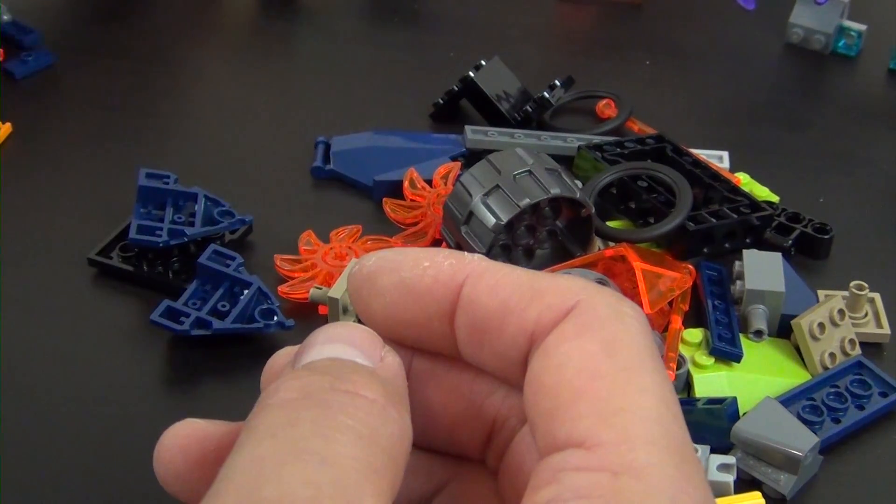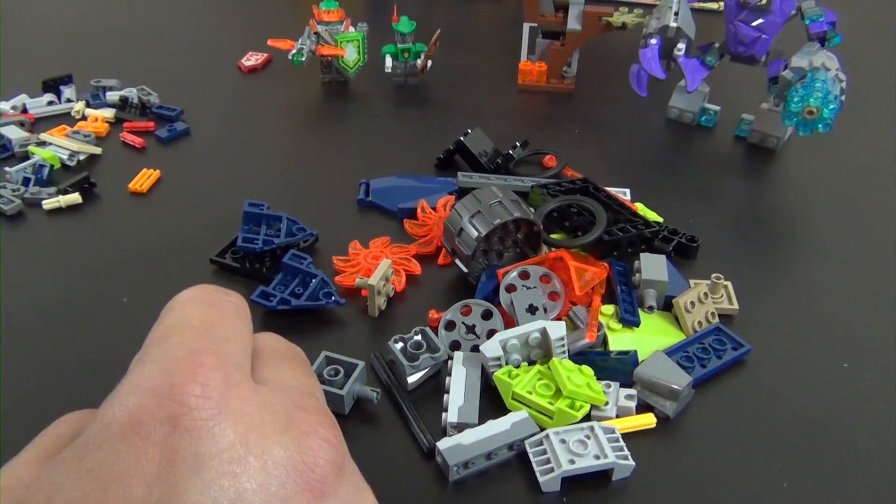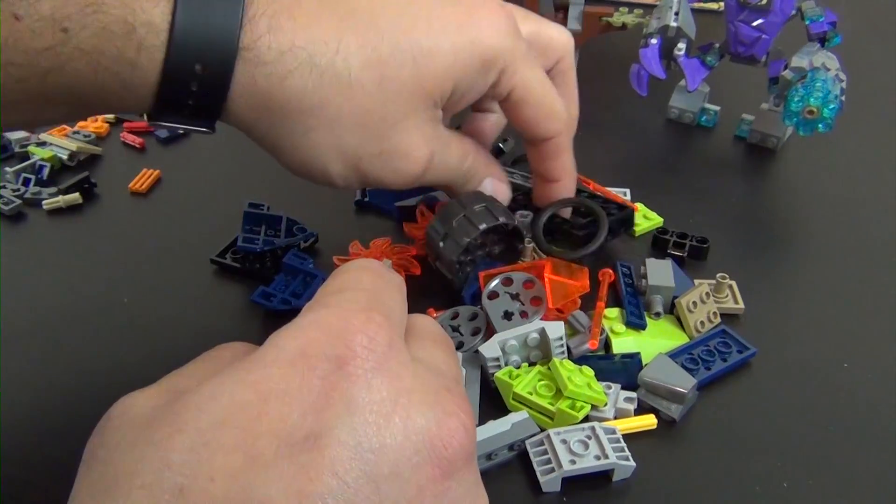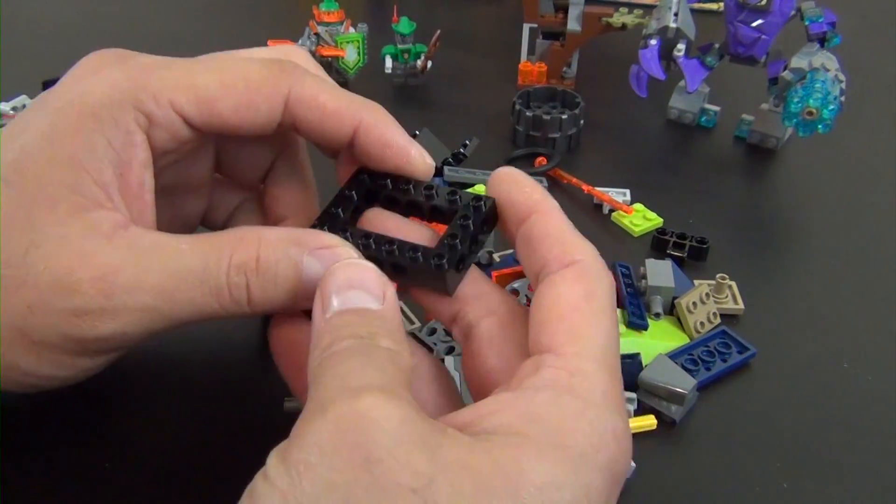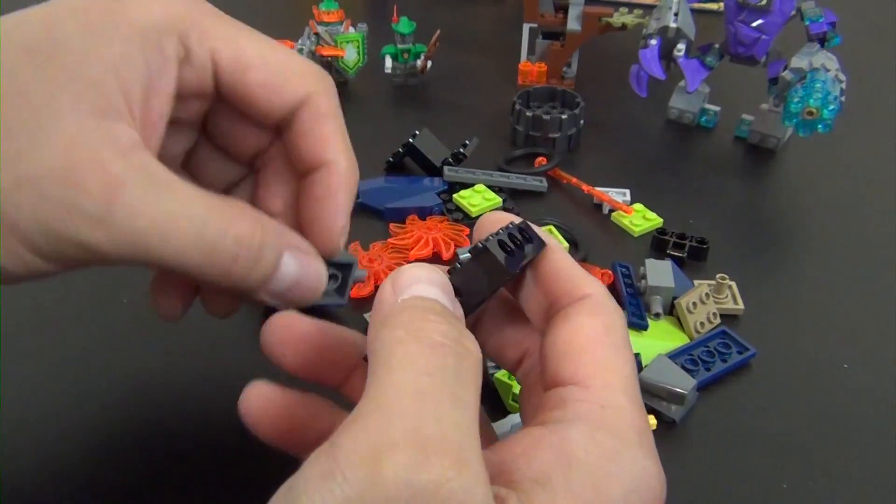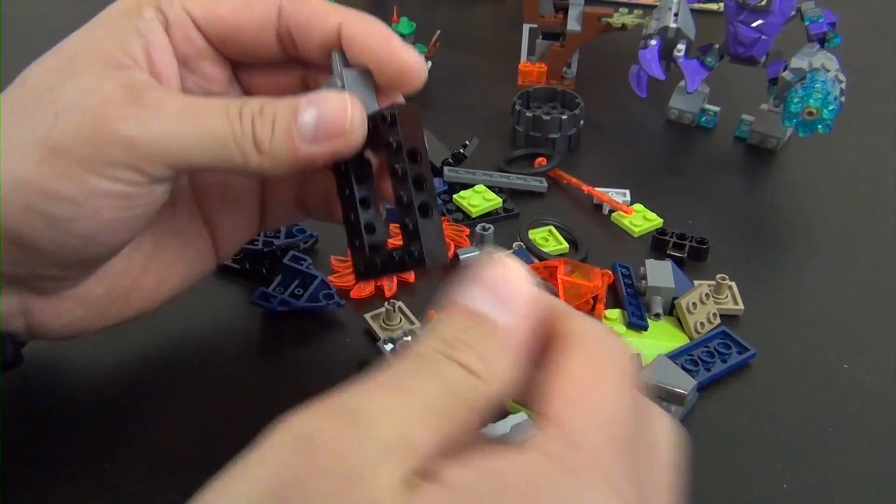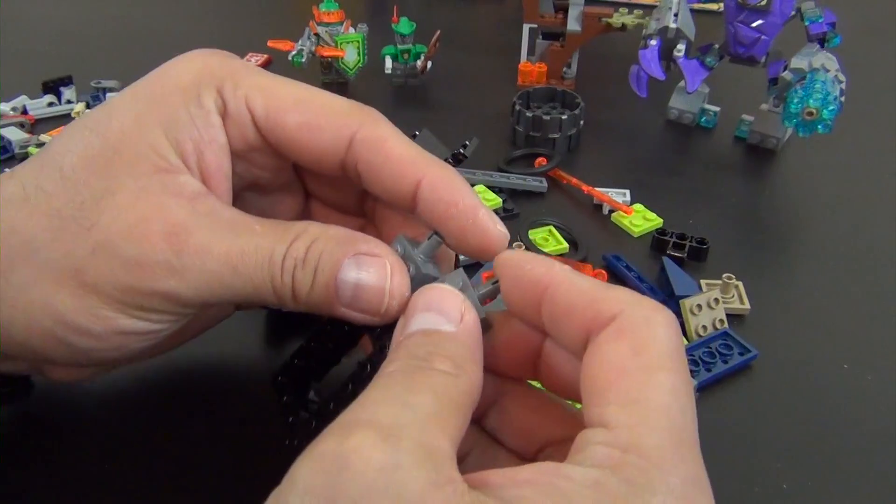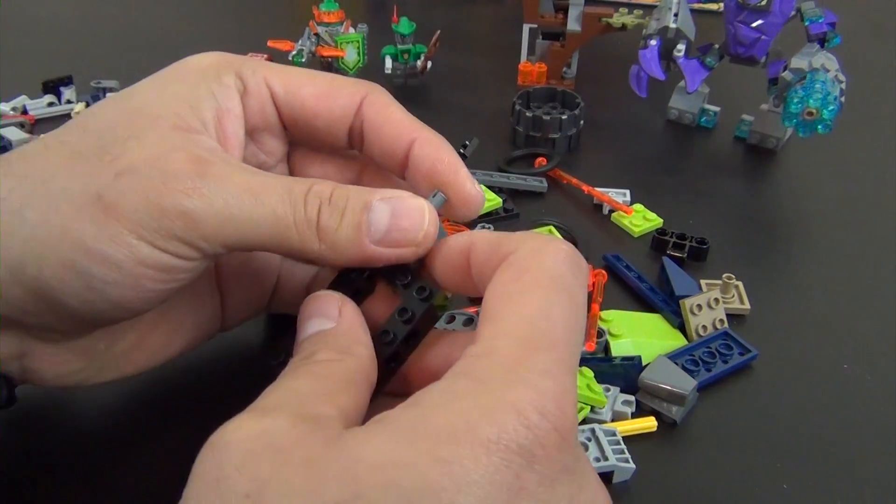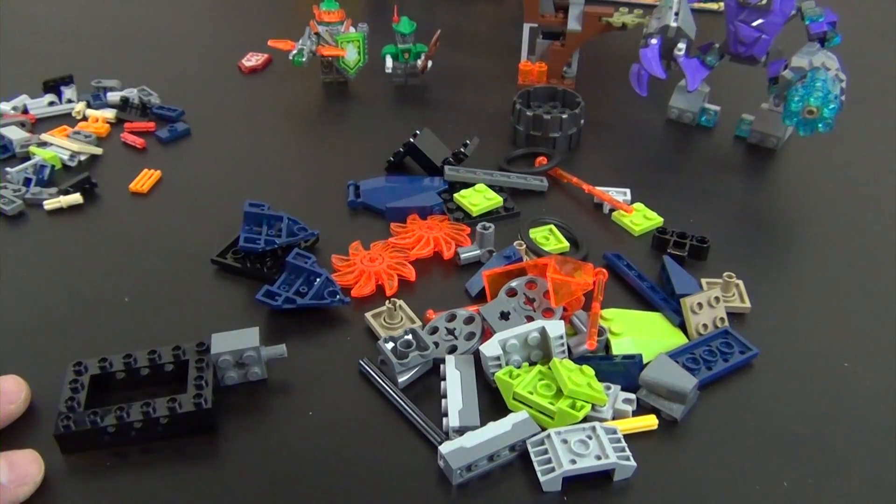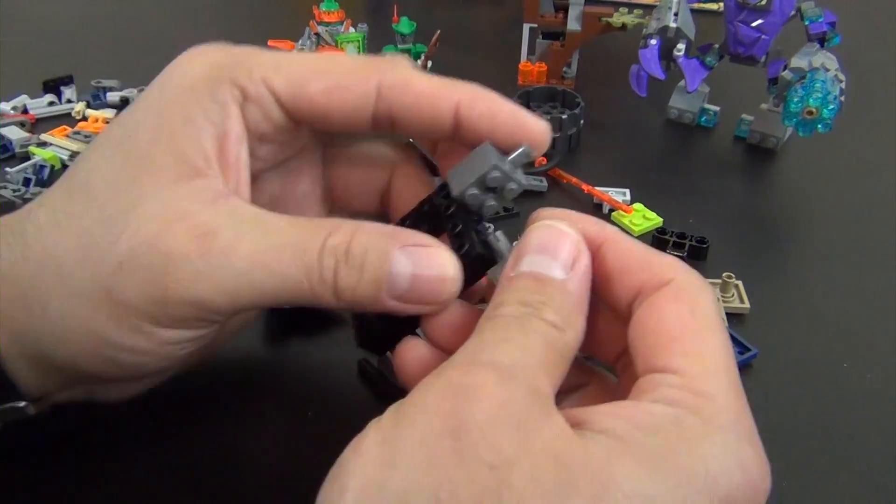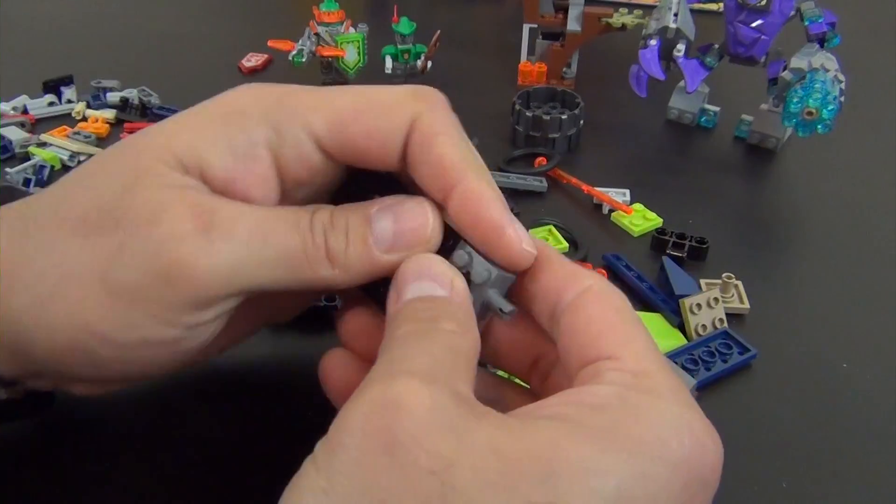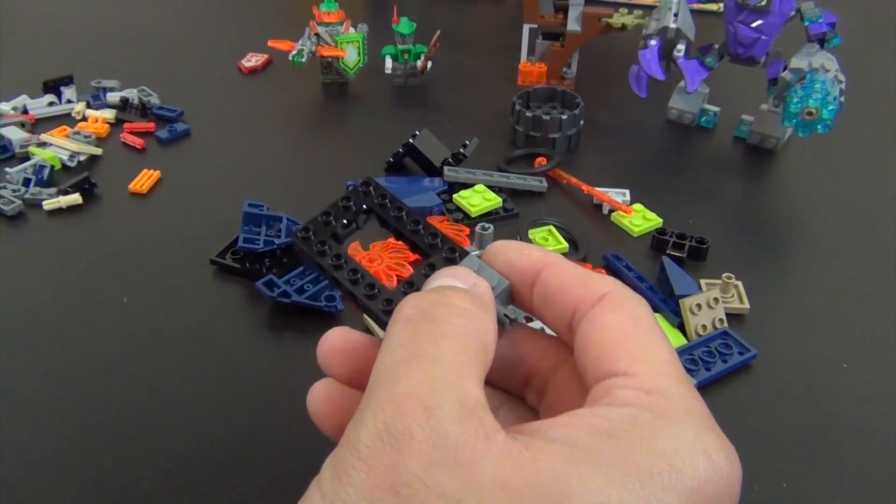Alright, now we can start building the stone destroyer. So we finished one complete bag before we actually even start building the vehicle that's on the front cover and the vehicle that the set is named after. And of course I would drop a piece.